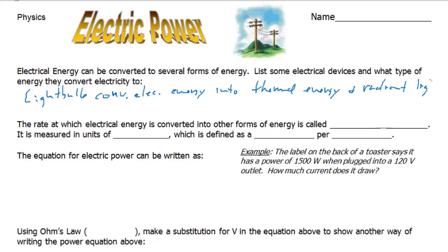The ideal light bulb would convert electric energy into all radiant energy without producing any thermal energy, but there's always waste heat that's produced. I would like you to pause the video and write down at least one or two examples of other devices that convert electric energy into some other form of energy and try to think of examples that aren't just converting into thermal energy or light energy.